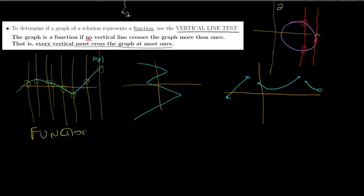The second graph is a more complicated shape. Drawing a vertical line here, it crosses only once - but that's the exception. Drawing another vertical line, it crosses the graph twice. Right away, that means it's not a function. Drawing yet another line, it crosses four times. As long as any vertical line crosses more than once, the graph is definitely not a function.